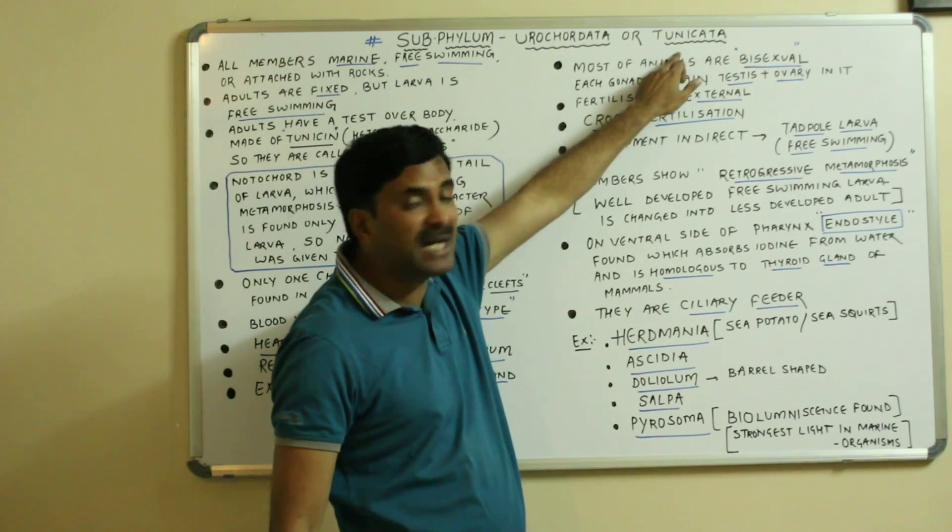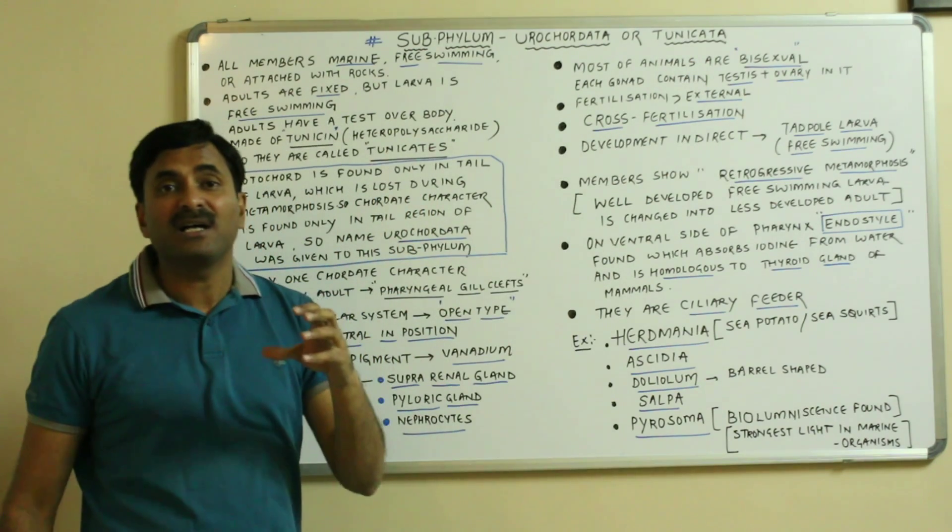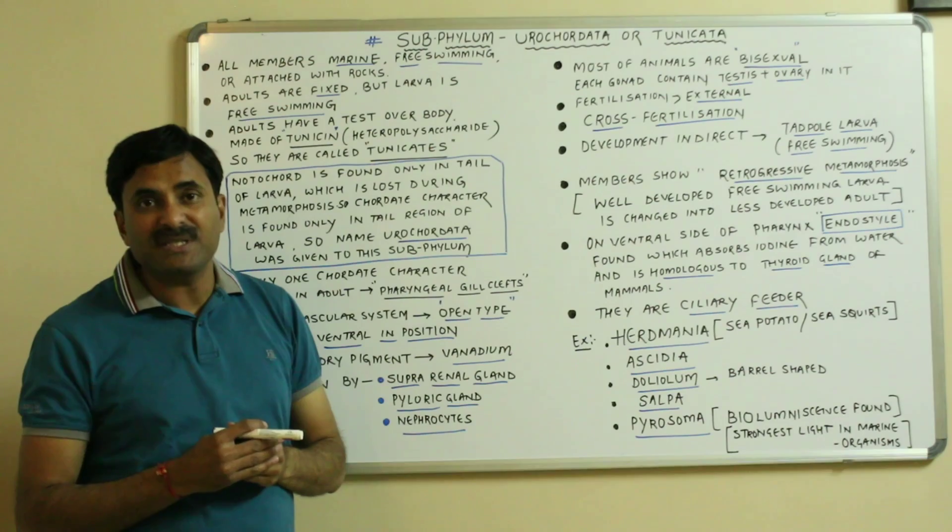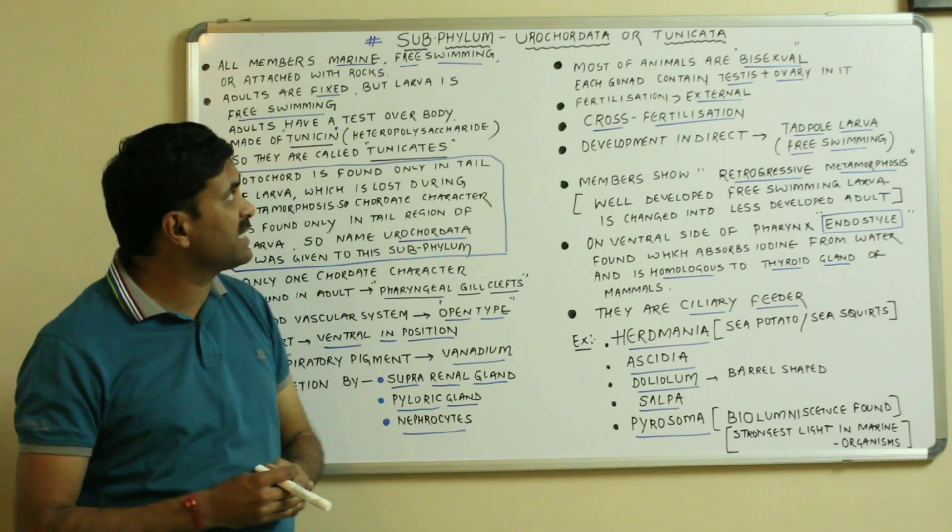And why they are called Tunicata? Because they have a test or a covering on their body made up of tunicin, and hence they are called Tunicata.